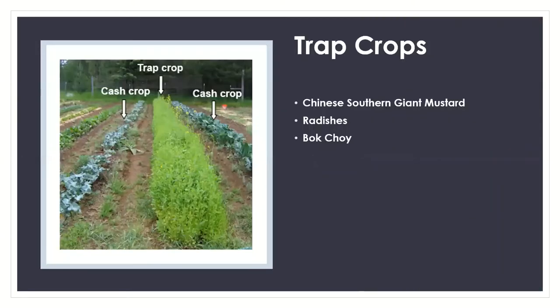With integrated pest management, there is really no one way to deal with a pest. Your best management program is to use multiple management practices in combination — reflective mulch and no-till, or reflective mulch and trap crops. The more different practices you utilize, the more successful you're going to be. There is no single answer for pest issues.